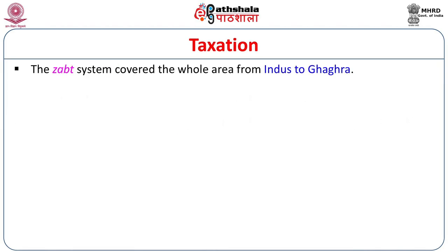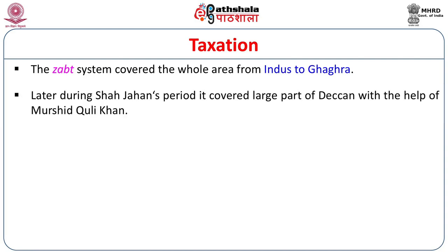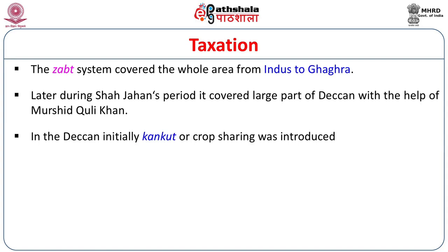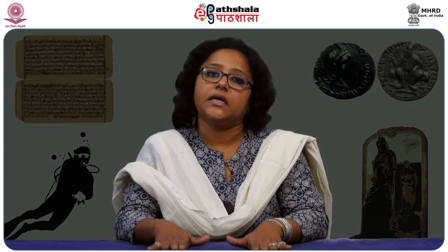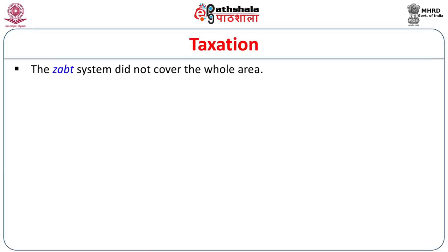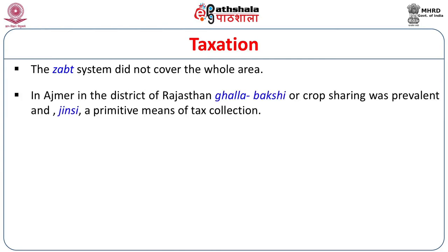The Zabt system covered the whole area from the Indus to the Ganga. Later, during Shah Jahan's period, it covered large parts of the Deccan with the help of Murshid Kuli Khan. In the Deccan, initially Kankut or crop sharing was introduced, then cash rates or Dastur ul-Amal were calculated, but it could only operate when the Mughals controlled the Deccan. The Zabt system did not cover the whole area — in Ajmer and the district of Rajasthan, Ghala Bakshi or crop sharing was prevalent, and Jinsi, a primitive means of tax collection, also operated in Rajasthan.